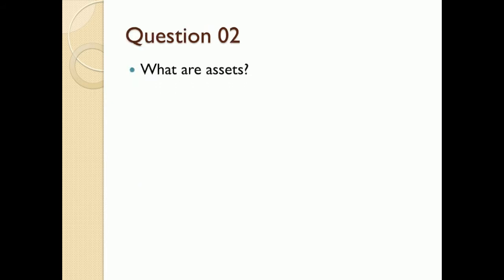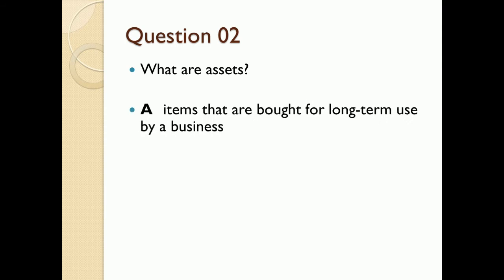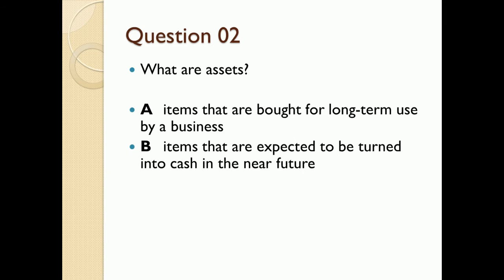Question number two: What are assets? Assets can be defined in a variety of ways and you have to pick the accurate one. Option A: items that are bought for long-term use by a business. Keep in mind that examiners often confuse you with definitions that seem similar — only someone conceptually clear can pick the right answer. Option B: items that are expected to turn into cash in the near future. That is another definition of assets, but does it cover all assets?